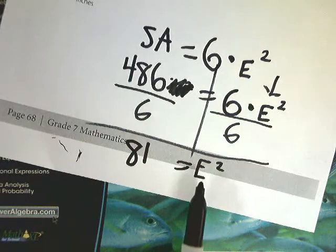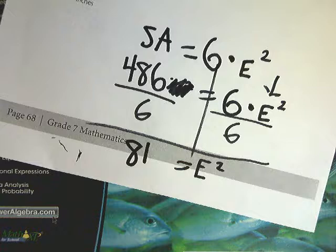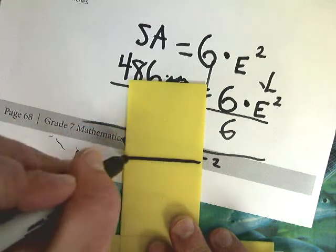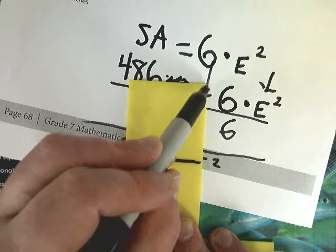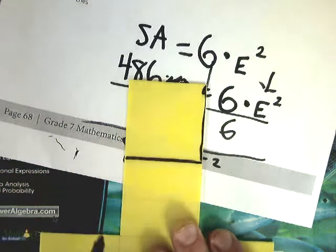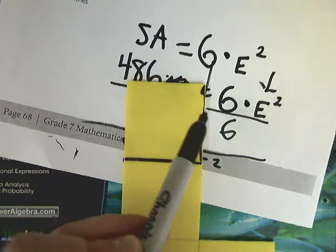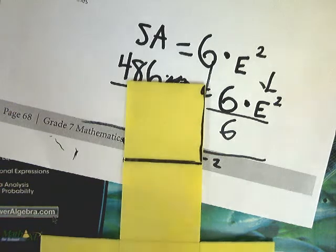Now, there's a couple ways I could go about this. I know that e squared means edge times edge, or e times e, which would be e squared. So I could take the square root or I could find a side that I can multiply by itself and equals 81.